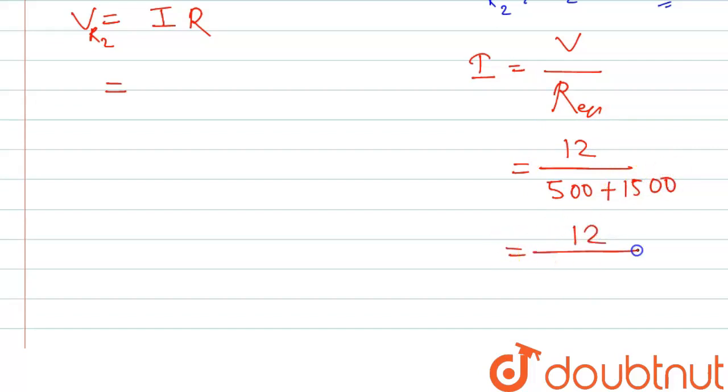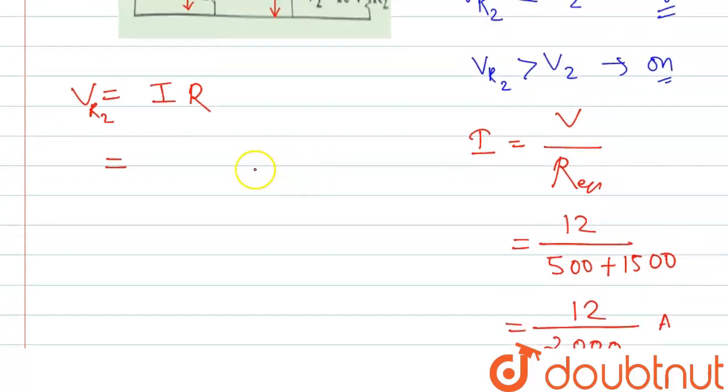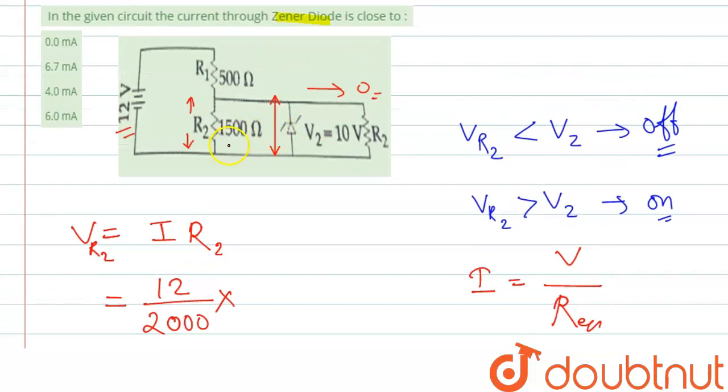So this will be 1200 by 2000. So this is the current, ampere. Now if we put here the current, that is 12 by 2000, and the resistance, that is R2, because we are finding the voltage across R2. So it will be R2, and R2 is 1500.